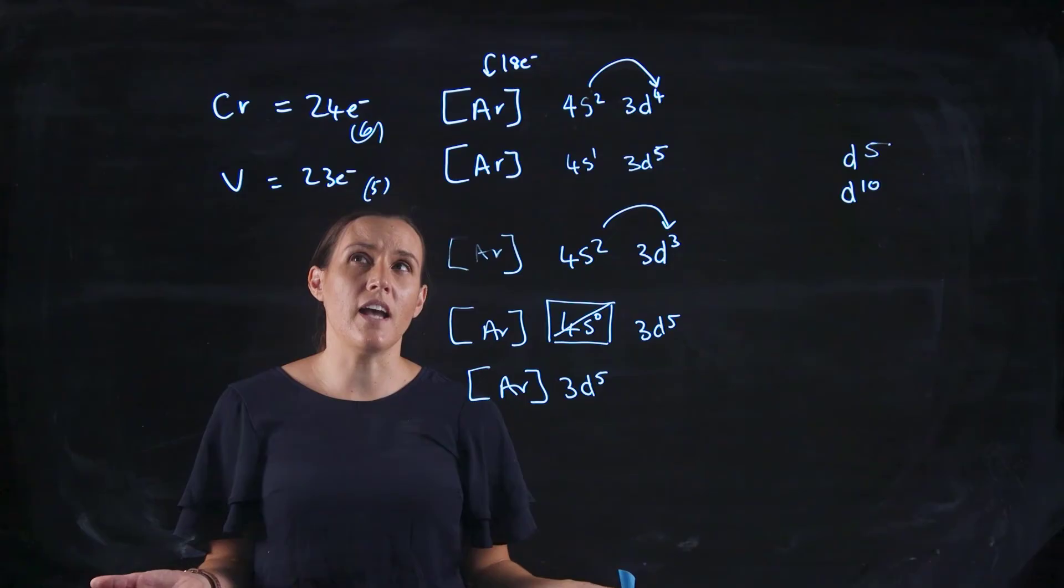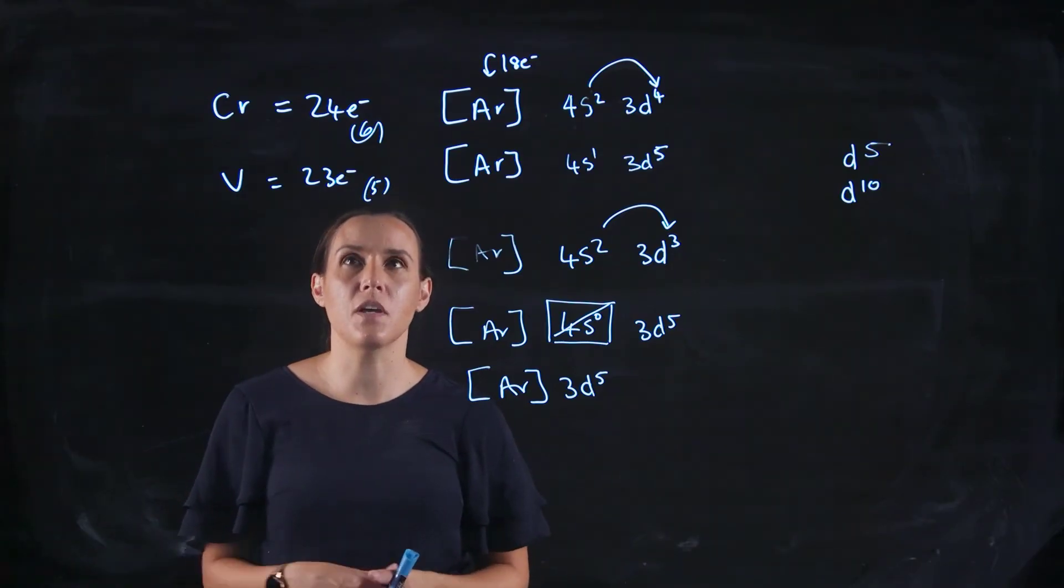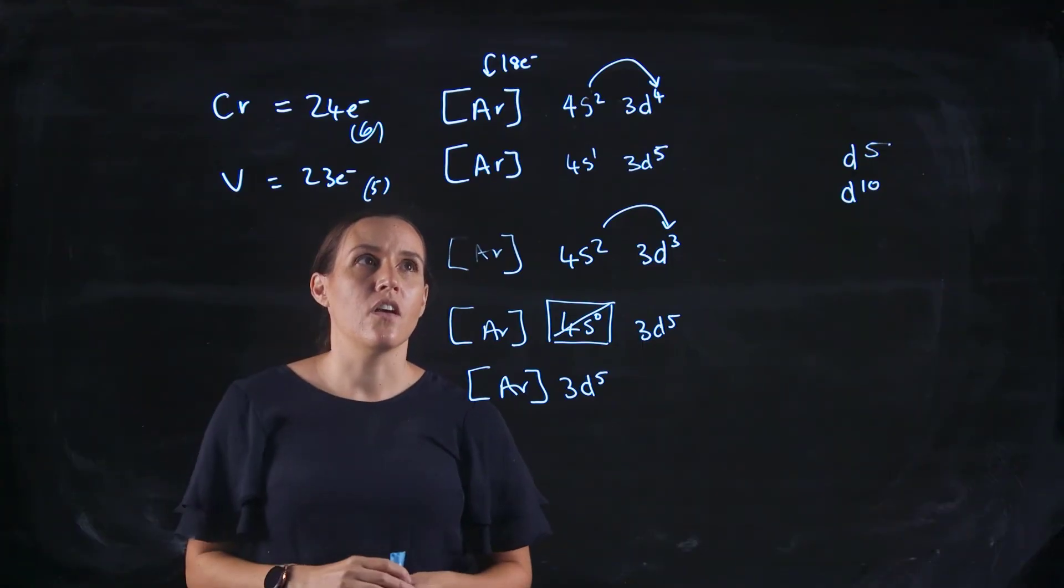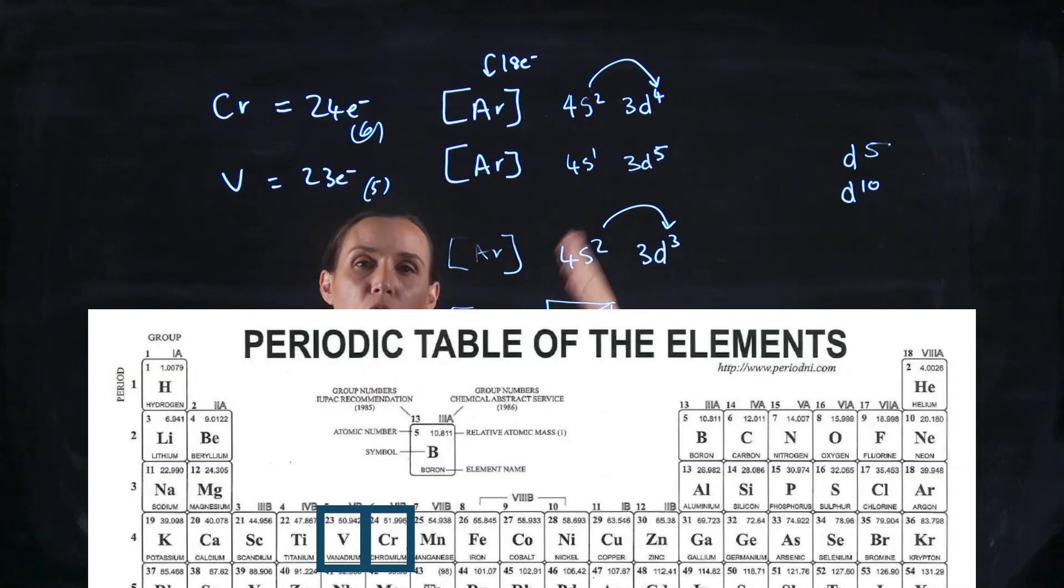So it gives you a bit of ideas about how to do those transition metal ones. So there will be a pattern. Anything that's got 3d4, that will promote 1 up. Anything that's got 3d3, that will promote 2 up. So it will be the 4d4. The 4d3 would do the same.